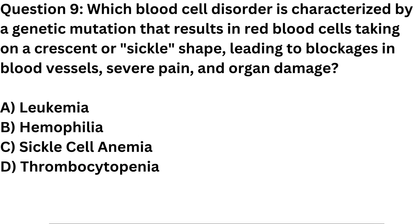Question 9. Which blood cell disorder is characterized by a genetic mutation that results in red blood cells taking on a crescent or sickle shape, leading to blockages in blood vessels? A. Leukemia. B. Hemophilia. C. Sickle cell anemia. D. Thrombocytopenia.